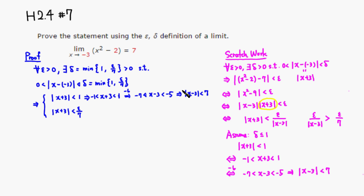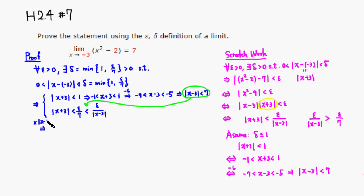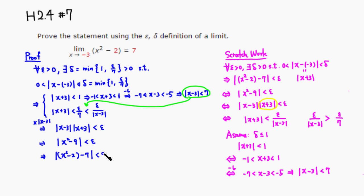Since 7 is bigger than |x - 3|, we have epsilon over 7 is smaller than epsilon over |x - 3|. Using this inequality — because we're replacing by a smaller denominator it gets larger — multiplying by |x - 3| gives |x - 3| times |x + 3| less than epsilon. Multiplying out gives |x² - 9| less than epsilon, which implies |x² - 2 - 7| less than epsilon. That's exactly what we wanted to show.